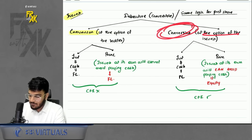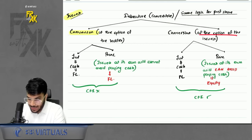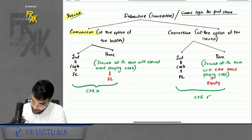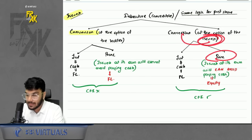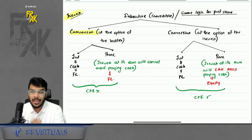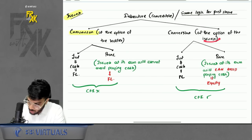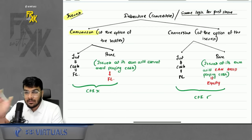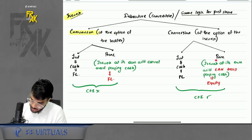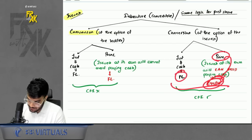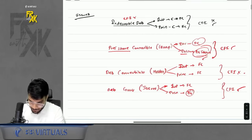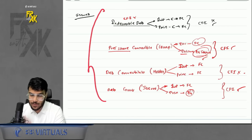If the conversion option is with the issuer: interest is still paid in cash — FL. But for principal, the issuer at its own will can avoid paying cash by choosing to give equity shares. So the principal becomes equity. Little FL, little equity — it is a CFI. After this conceptual discussion, I took an oral test in class on whether different instruments are CFI or not.